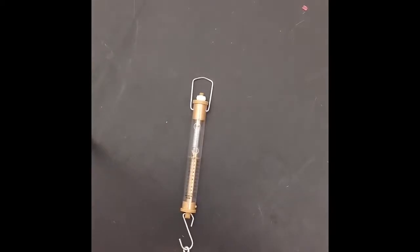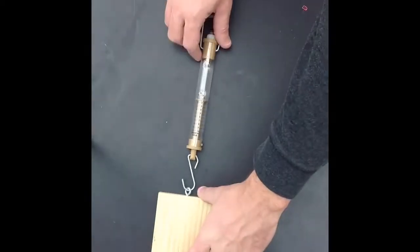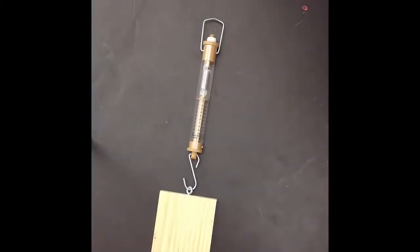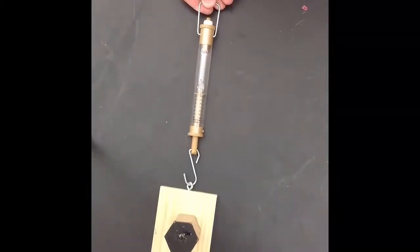Here you see the student holding the spring scale and pulling gently parallel to the table. You might notice that if there is not enough mass on the sled, you might not get a significant reading. You might need to add some mass so that you can actually get a reading.